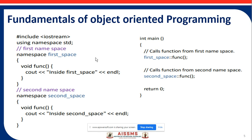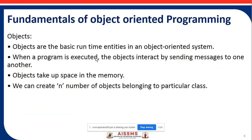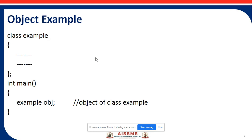The next point is objects. Objects are the basic runtime entities in an object-oriented system. When a program is executed, objects interact by sending messages to one another. Objects take up space in memory, and we can create a number of objects belonging to a particular class.